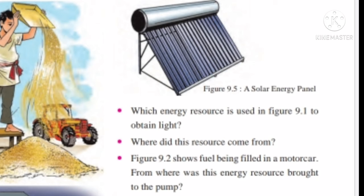Our next question is: figure 9.2 shows fuel being filled in the motor car — from where was the energy resource brought to the pump? Fuels come to the pump from petroleum refineries, an industrial process plant where crude oil is being processed and refined. Figure 9.3 shows Malti with her pinwheel and her father winnowing grains — who is helping both of them? They are being helped by wind energy.